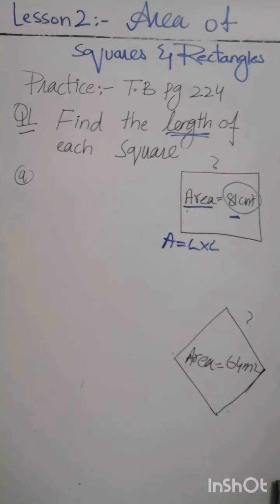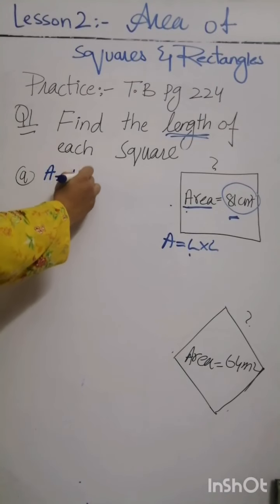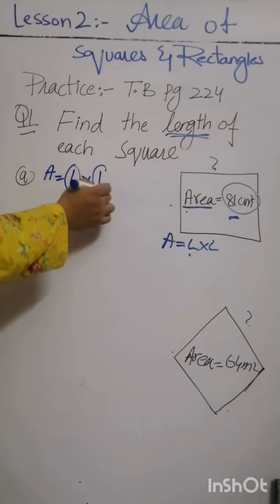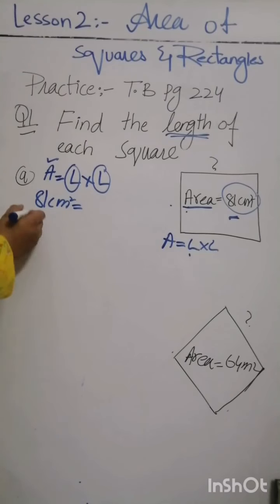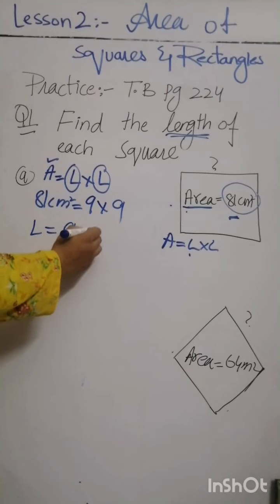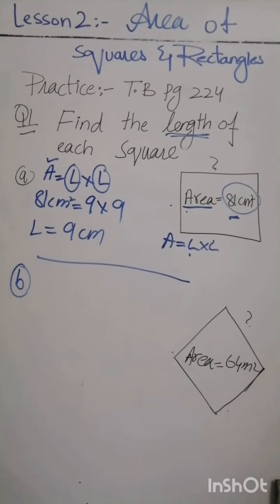We think of a number which, when multiplied by itself, gives 81 — that will be the length. First we write down the formula: area is equal to length multiplied by length. Area is 81 centimeter square. The number is 9, because 9 times 9 equals 81. So the length is 9 centimeters. Now for part b, the area is 64 meter square.